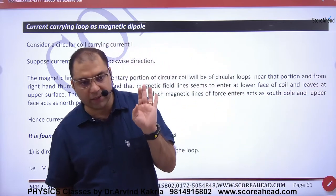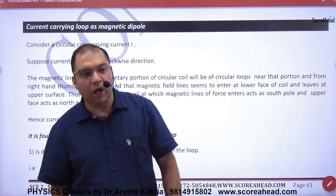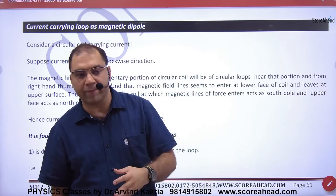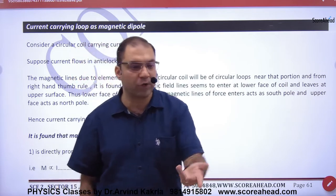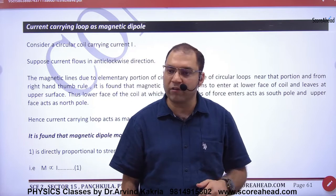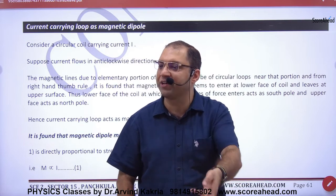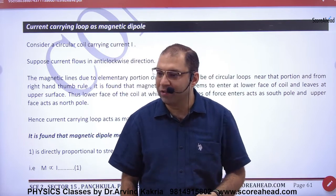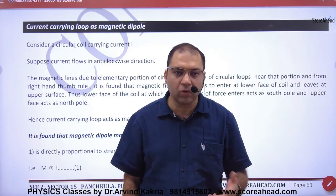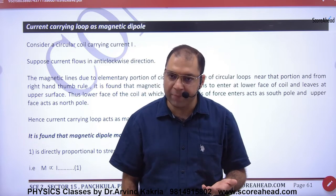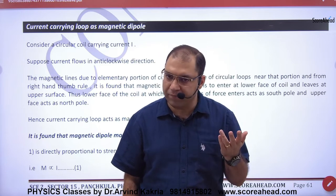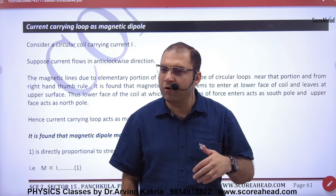Is this clear? Now, if a current-carrying loop is a magnet, then it will have poles. It is like a small magnet — I will show poles north and south. So we have to make imaginary poles, because it has B generated, and you will have to decide the poles.